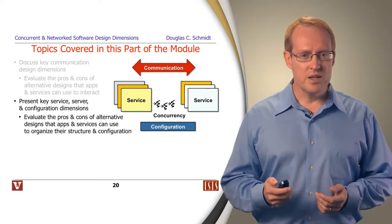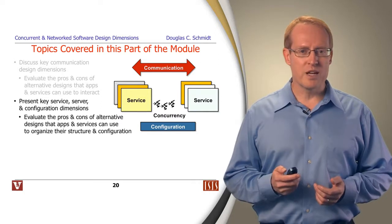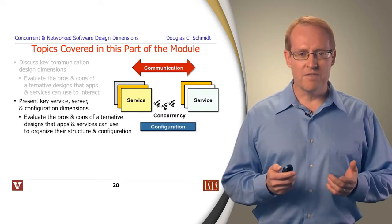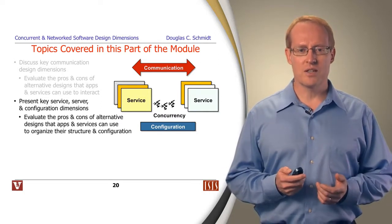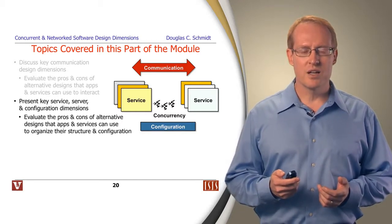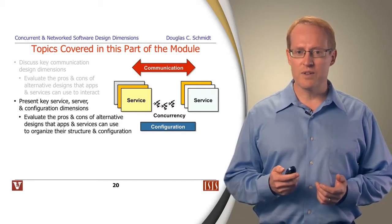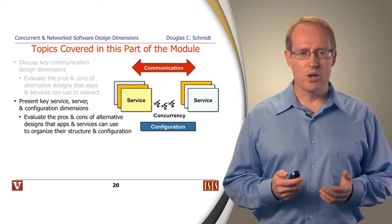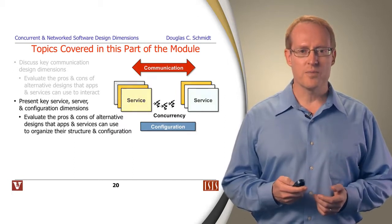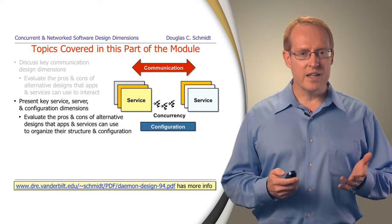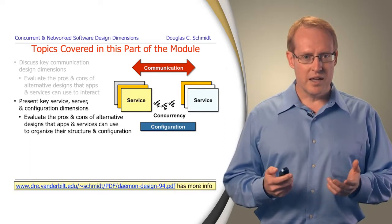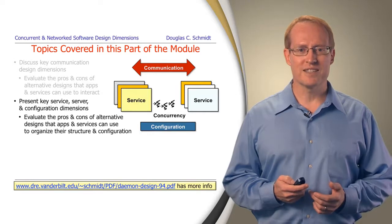In this part of the module, we're going to be presenting key service, server, and configuration design dimensions, which will focus on evaluating the pros and cons of alternative designs that apps can use to organize their structure and configuration. This material is covered in more detail at the URL at the bottom of the slides.